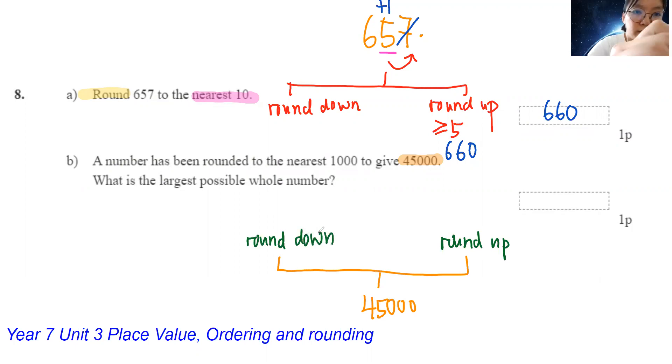So think a little bit. In order to find the largest possible whole number, should I go for rounding down or rounding up? If I don't know, let's try both. So to round a number to 45,000, my number has to be bigger than 45,000, right? For example, I can pick a number that's bigger than 45,000.